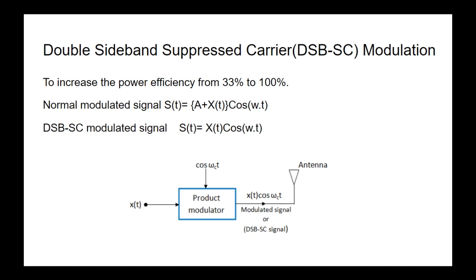Double Sideband Suppressed Carrier modulation is used to increase power efficiency from 33 percent to 100 percent. In a normal modulated signal, s(t) equals [A + x(t)]·cos(ωt), but in DSB-SC the modulated signal is s(t) equals x(t)·cos(ωt) — carrier frequency only. In mathematical terms it looks straightforward: you can see a product modulator where x(t) and cos(ωt) are applied and we get the DSB-SC modulated signal, which is transmitted through an antenna. In practice, however, the actual circuit diagram is trickier than this simple block diagram.